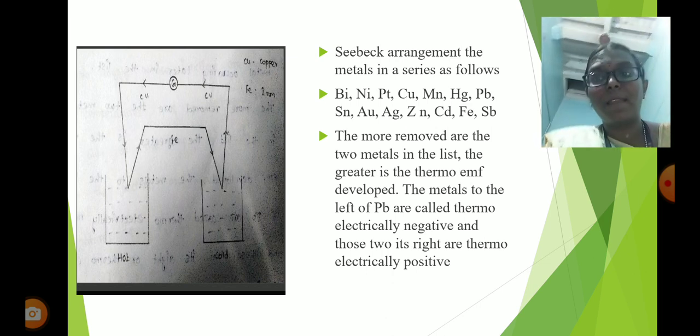Seebeck arranged the metals in a thermoelectric series as follows: Bi, Ni, Pt, Cu, Mn, Hg, Pb, Sn, Au, Ag, Zn, Cd, Fe, Sb. When a thermocouple is formed between any two of them, the thermoelectric current flows through the hot junction from the metal occurring earlier to the metal occurring later in the list. The more separated the two metals are in the list, the greater the thermo-EMF developed. Metals to the left of Pb are called thermoelectrically negative, and those to the right are thermoelectrically positive.